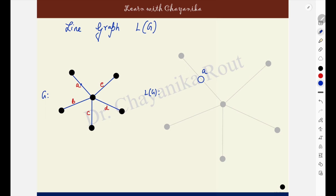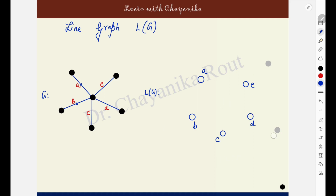Same labeling as the edges. This is edge B, so there will be a corresponding vertex for this edge, drawn on the midpoint. This is vertex B in the line graph corresponding to edge B. There is a vertex C corresponding to edge C, a vertex D corresponding to edge D, and a vertex E corresponding to edge E. So basically you are having vertices corresponding to the edges of the original graph — 5 vertices in total.